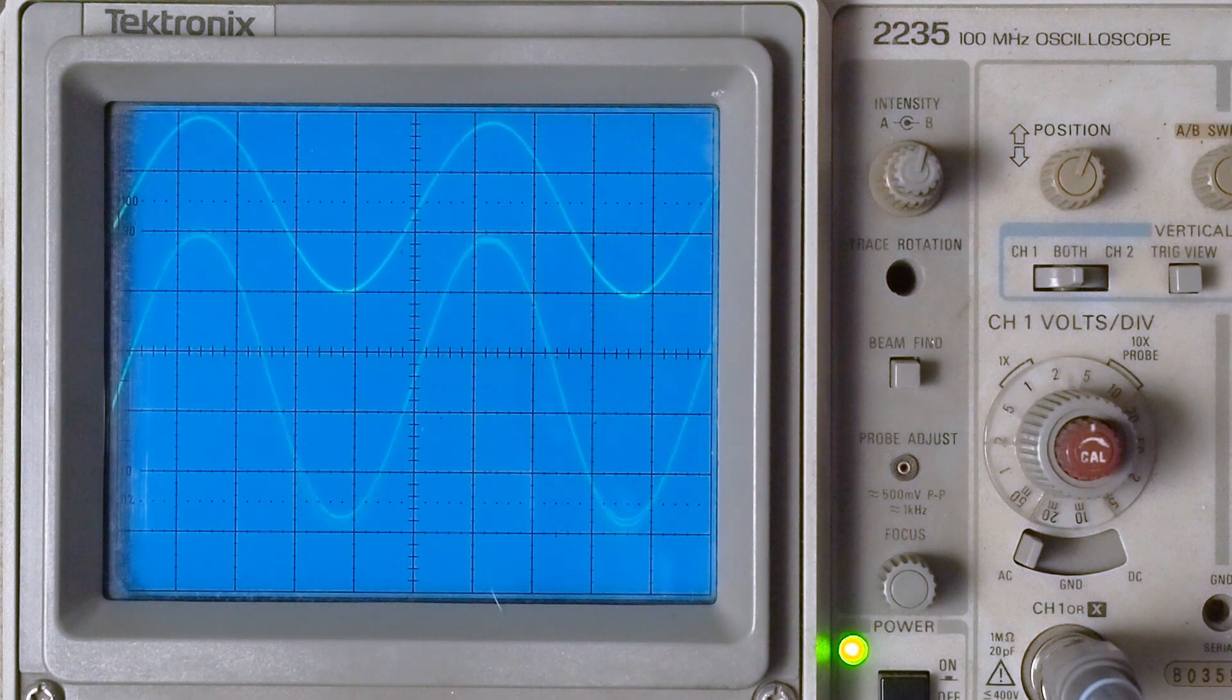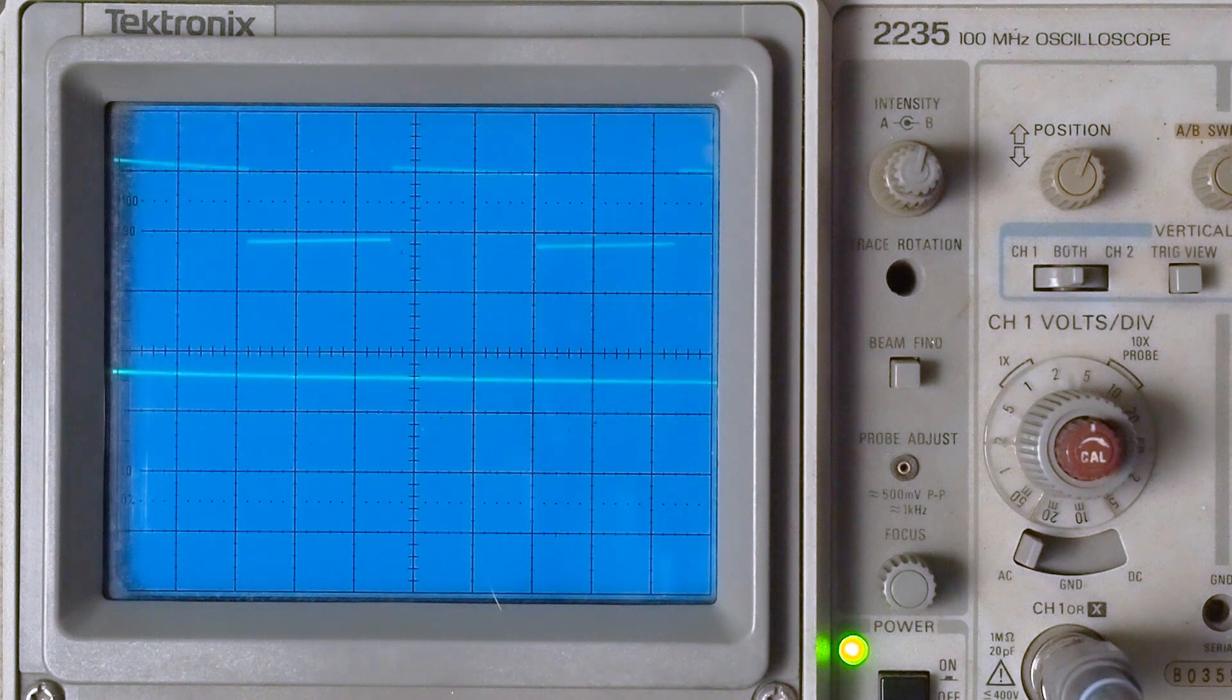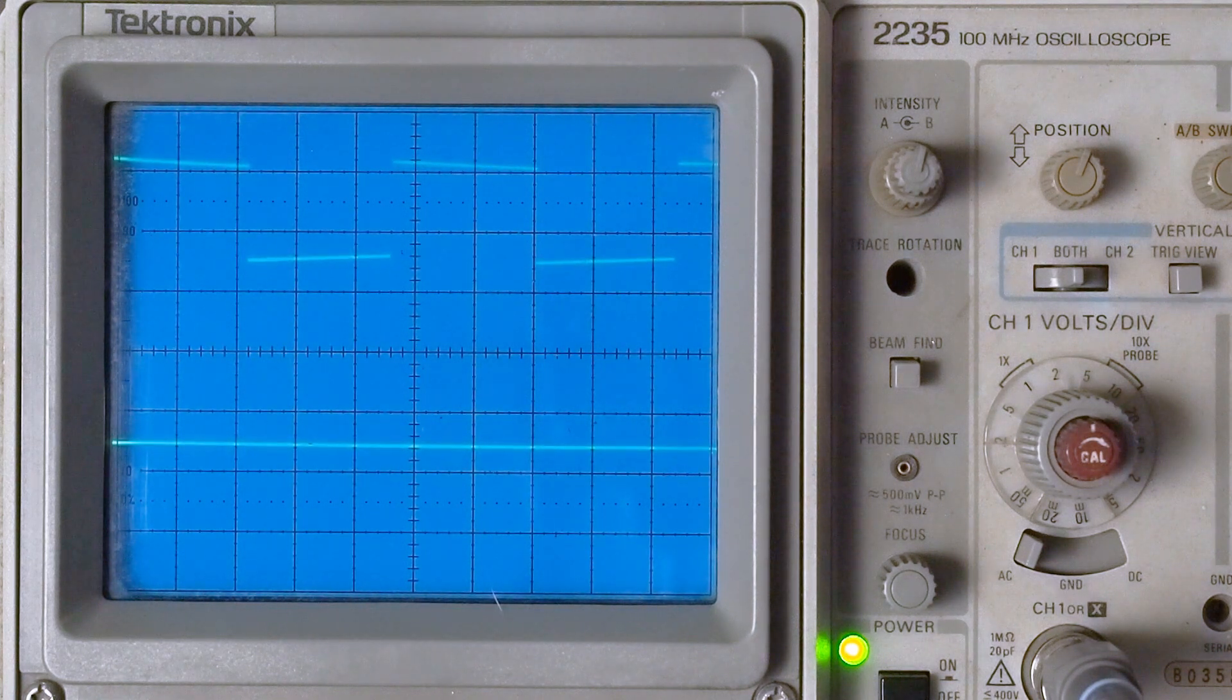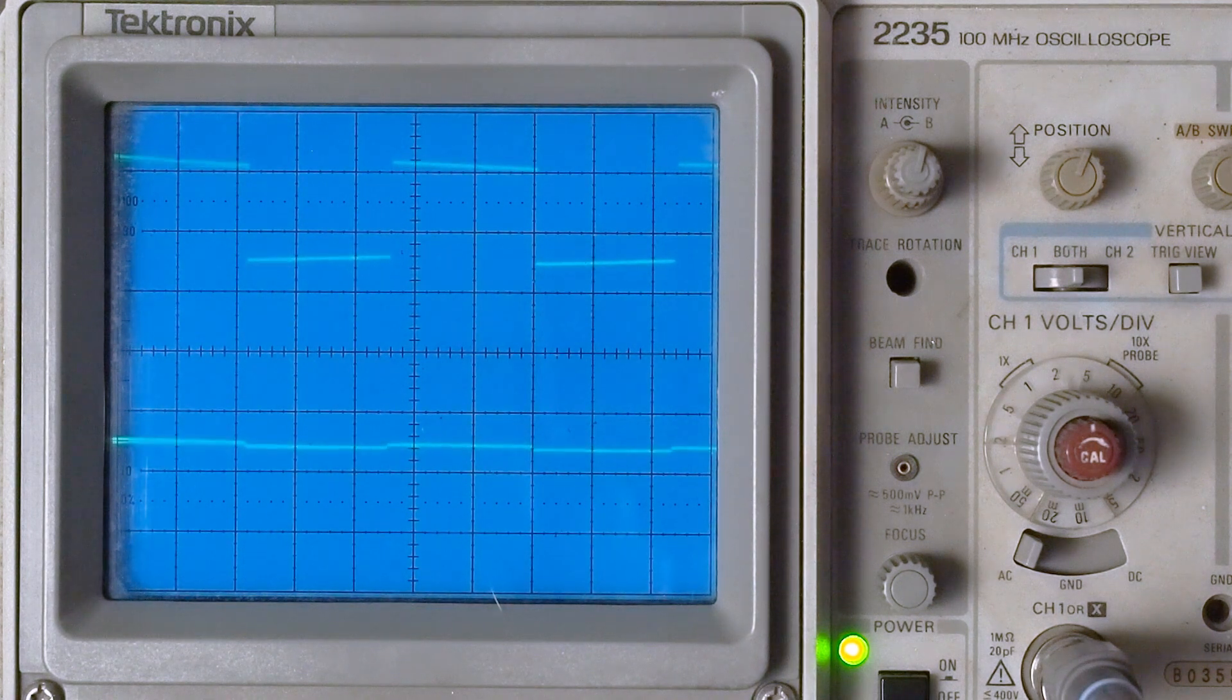The next thing we want to look at is let's see what it does with a square wave. Let's move that down a little bit. Because before, remember, it just had everything over on the left side, all high frequency. And here we go.